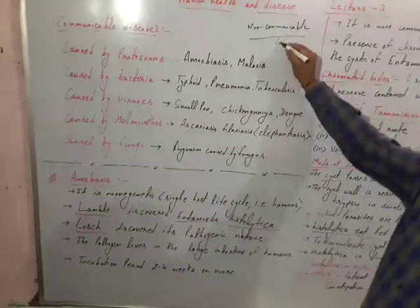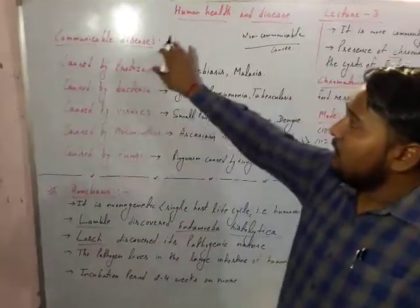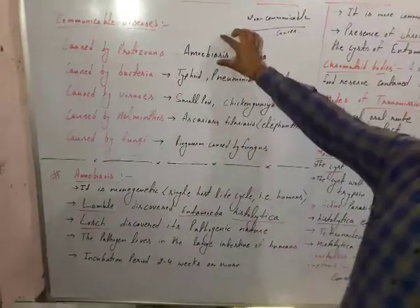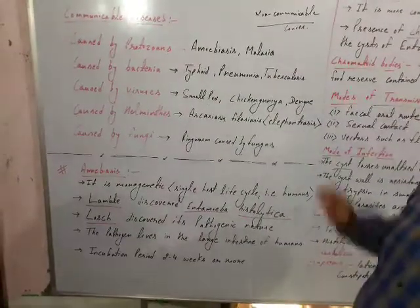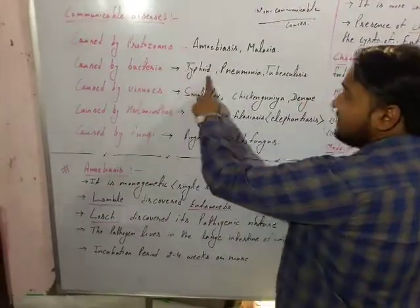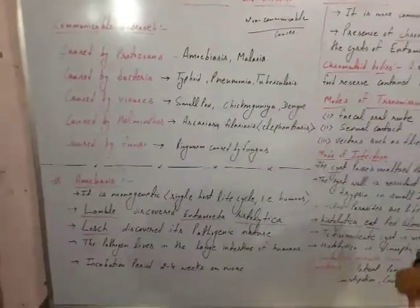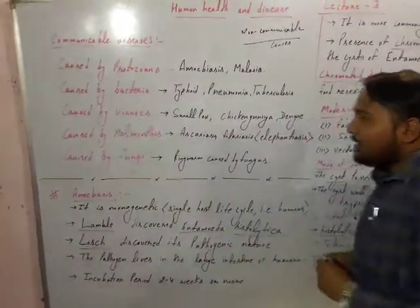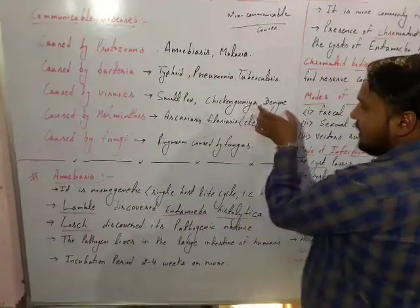Communicable diseases are caused by protozoans — for example, amoebiasis. Another example is malaria, which is also caused by a protozoan. The second category is caused by bacteria, such as Salmonella typhi, Streptococcus pneumoniae that causes pneumonia, and Mycobacterium tuberculosis that causes tuberculosis. The third category is caused by viruses — examples include smallpox, chikungunya, and dengue.